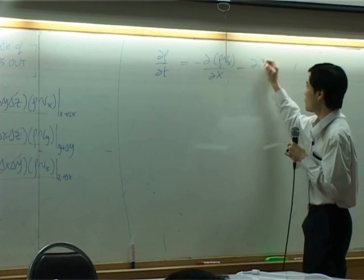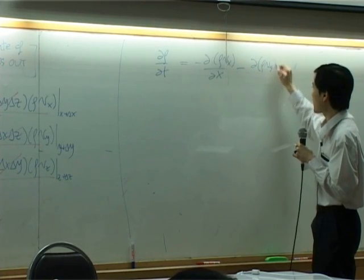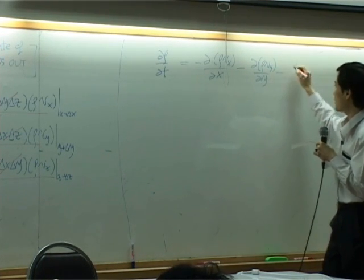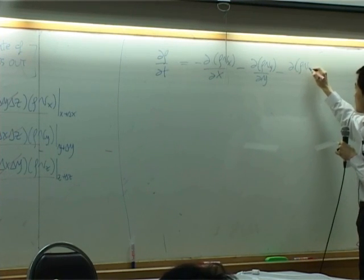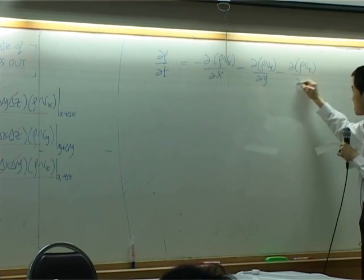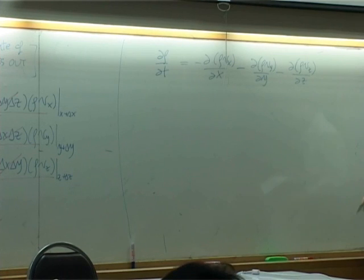Second term would be d of rho vy by dy, and then d of rho vz by dz. Can you see that?